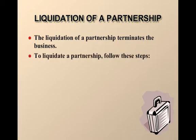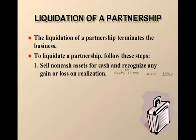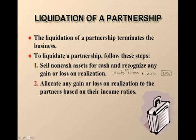There are several steps that you need to take in order to do this. The first step is to sell your assets for cash and recognize any gain or loss on the realization. For example, if you have an automobile and it's worth $10,000 net book value in your books, and you sell it for $12,000, you just had a gain, and that's going to be a revenue that you have to recognize at this time. The second step is to allocate that gain or loss on realization to the partners based on their income ratios.